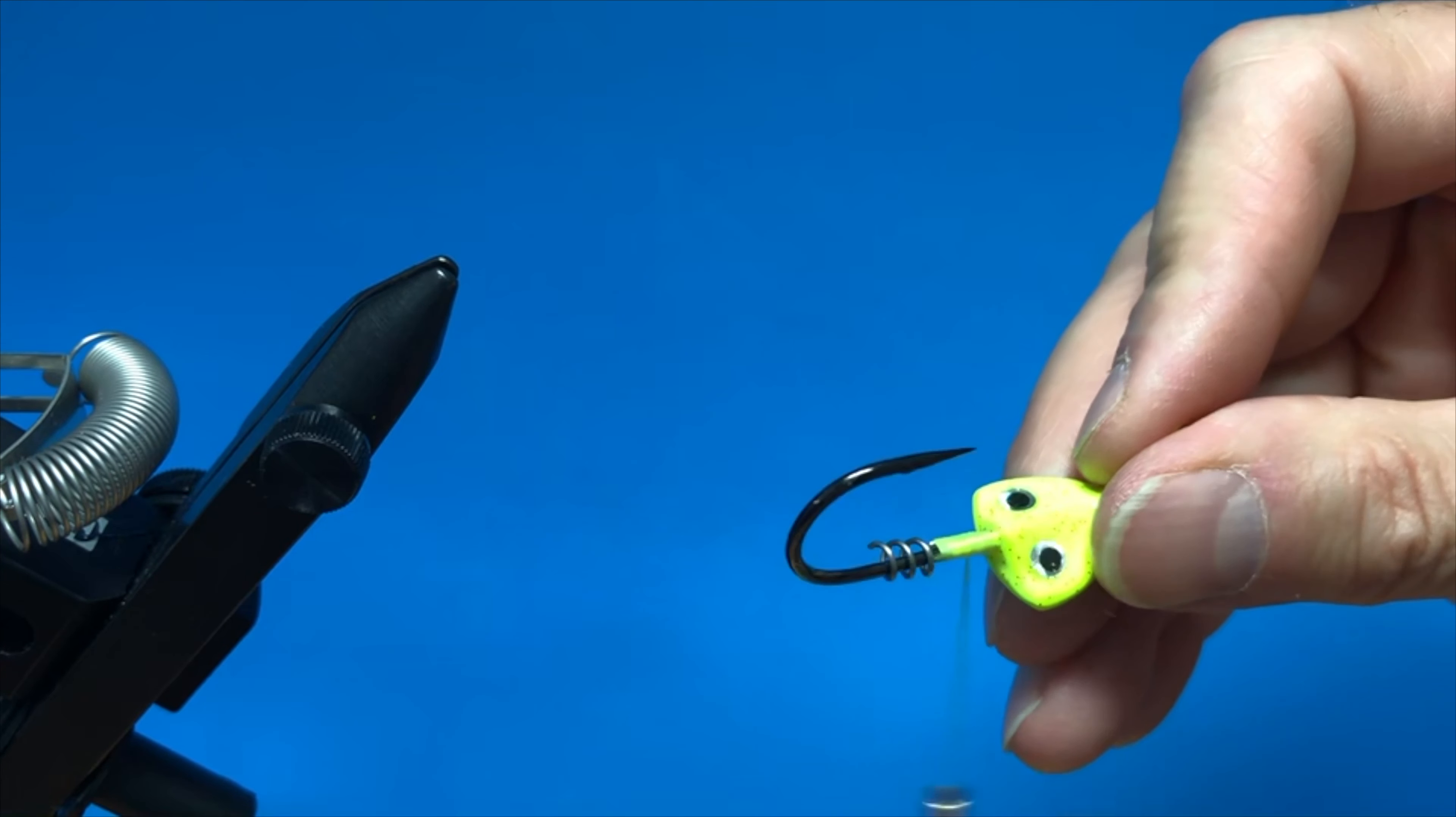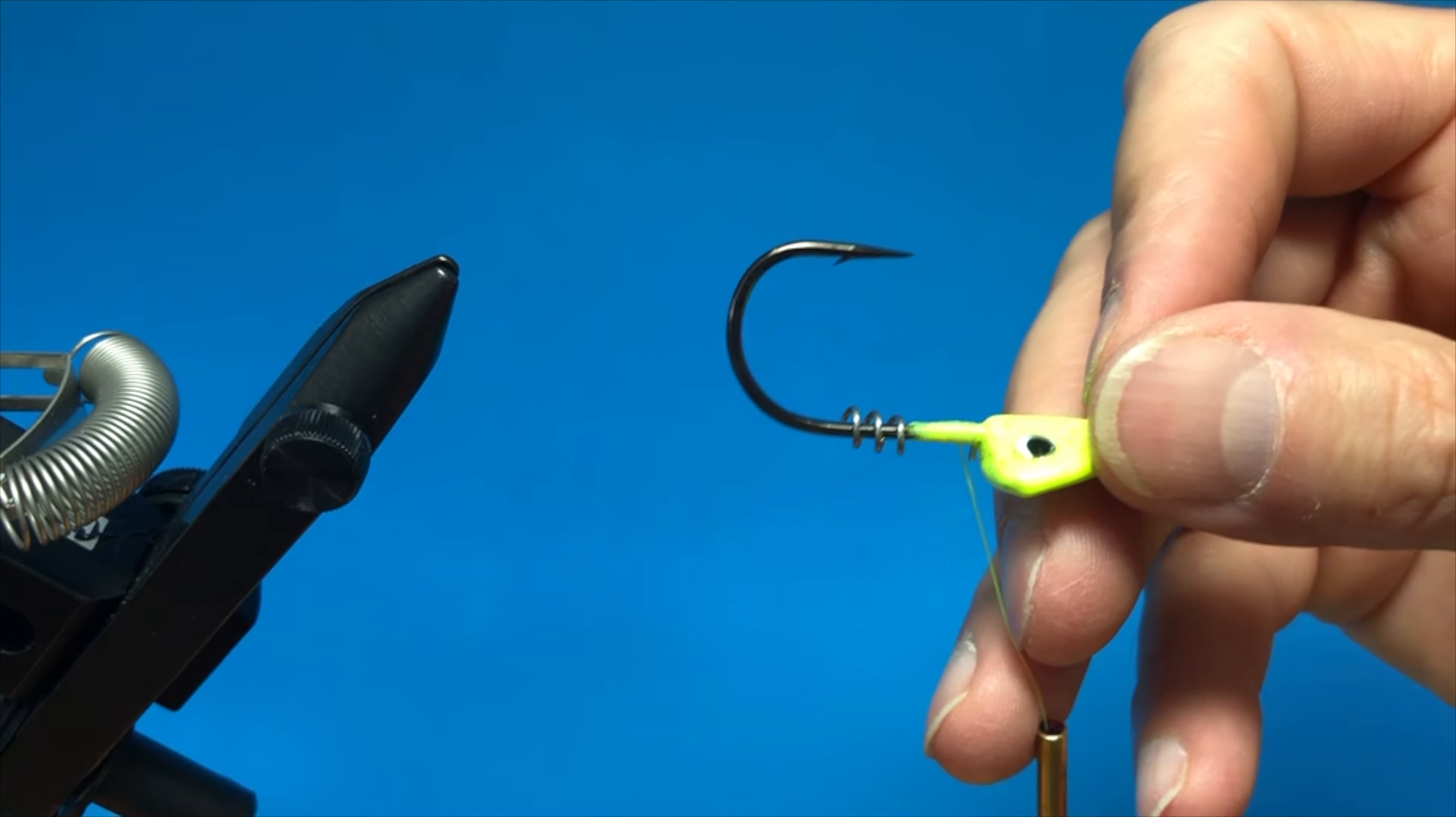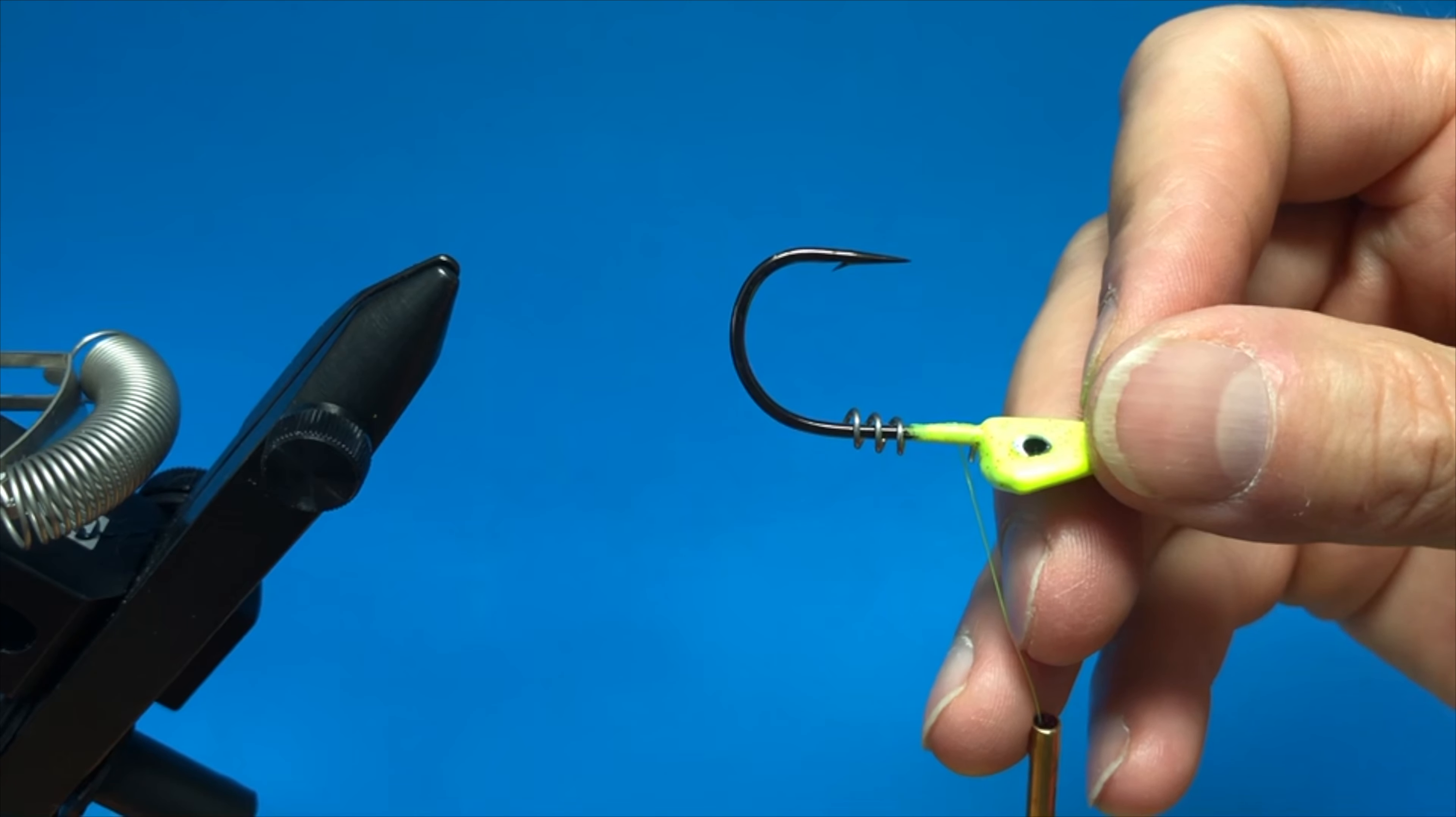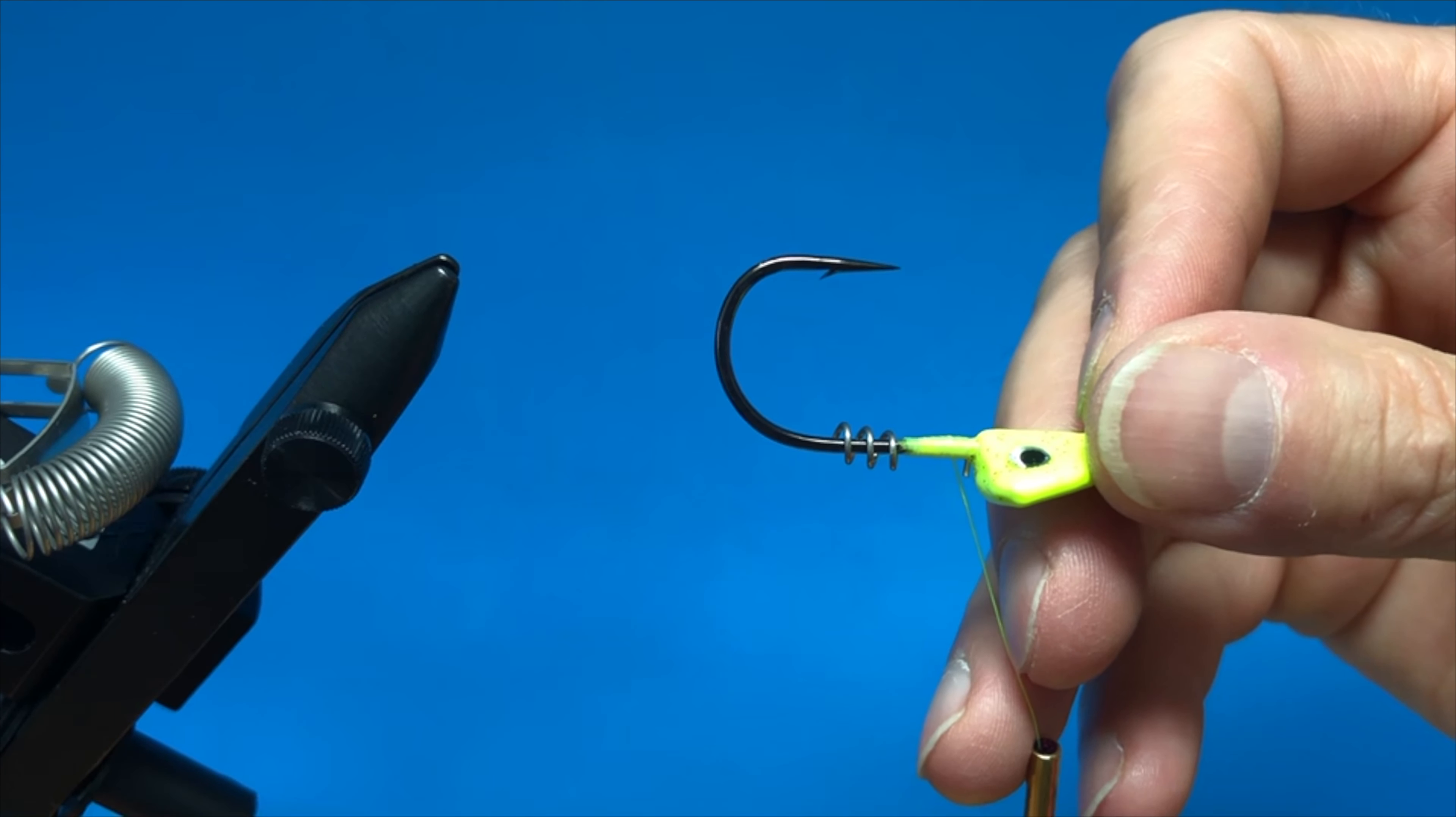So it's super easy to use. This is the Bugs Redfish Jig Head, works really well on this. You could use it on a ball head jig just as long as you have a bare shank to work with. Tie some materials right there. It just gives it a little bit more body. You could tie in some flash.